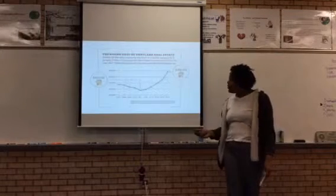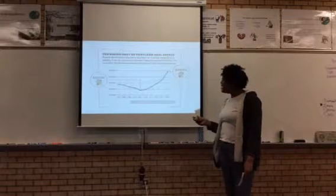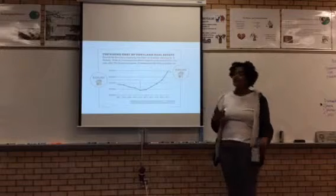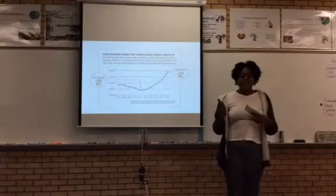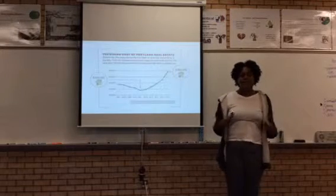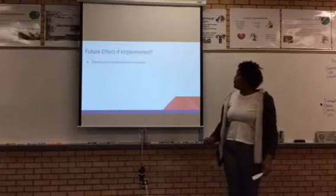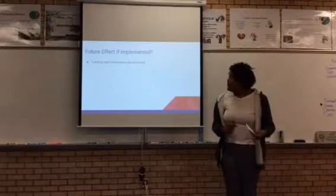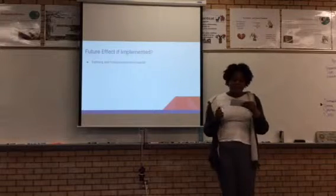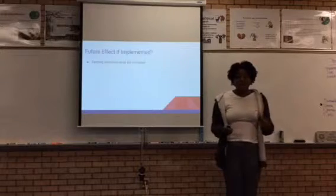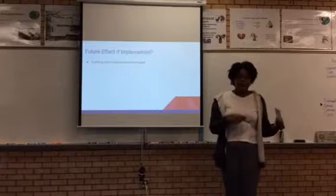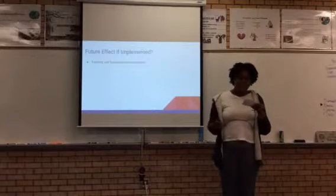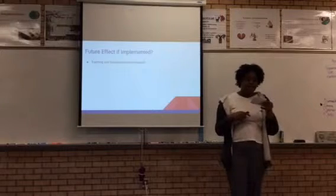Portland is an example of where an urban growth boundary was used. During 2011, their housing prices were about $200,000, and they increased to almost $400,000 — keep in mind the average housing price in the United States as a whole is $200,000. If we were to implement this, we would see significant preservation of farmlands and forestlands. Wisconsin, another example of where the urban growth boundary was implemented, saw an increase in farmland of 25,000 acres and a 28% increase in the number of farms.